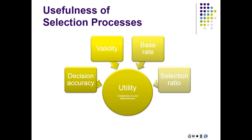Okay, so the usefulness of the selection process. Utility is another word for usefulness, and utility refers to whether it achieves the goals and whether it's cost-effective and worth doing. Factors that go into determining whether the selection process is useful include decision accuracy, validity of the items or predictors, the base rate of characteristics in the population, and selection ratio. Let's address those one by one.